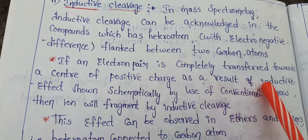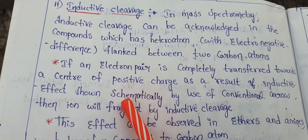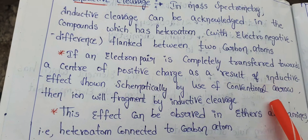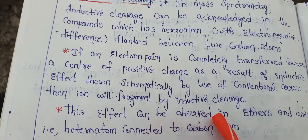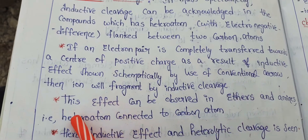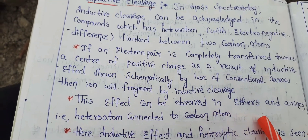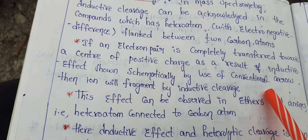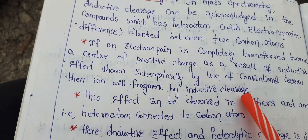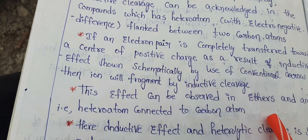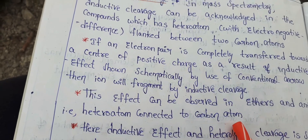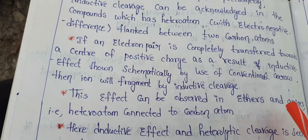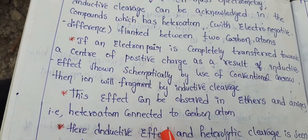If an electron pair is completely transferred towards the atom having the positive charge, that can be schematically shown using conventional arrows, and then that ion will fragment by inductive cleavage. This inductive cleavage can be observed in ethers and amines — that is, a heteroatom connected between two alkyl groups, meaning the heteroatom is connected to two carbon atoms.